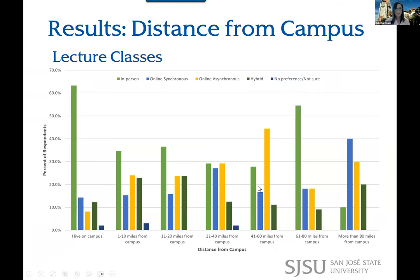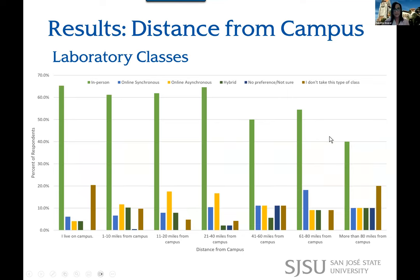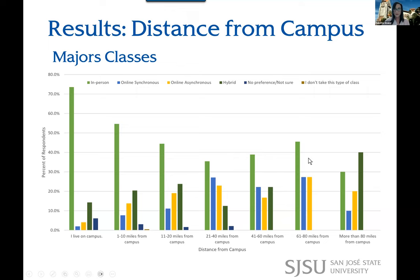Distance from campus was really one of the main factors. For lecture classes, those who lived on campus preferred in-person, and as you go farther from campus, that shifts — though there's an interesting spike for students farther away who still wanted to come to campus. For laboratory classes, it was resounding: in-person was preferred regardless of distance. For majors classes, in-person was a little more preferred, though students more than 80 miles from campus showed no clear preference as the highest response. For GE, there was no statistically significant dependence on distance from campus.